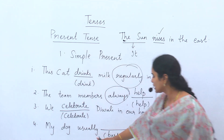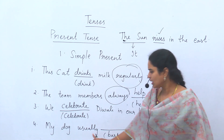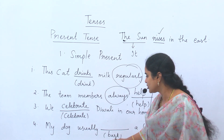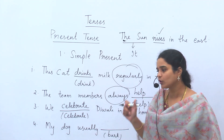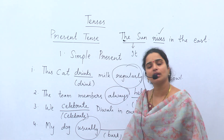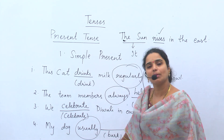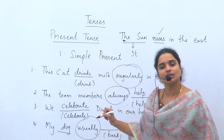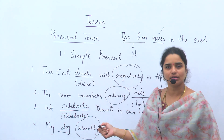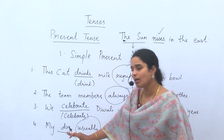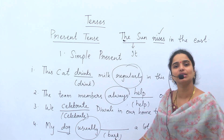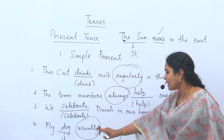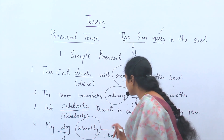The last sentence: 'My dog usually ___ a lot.' The clue word is 'usually' — so this is simple present tense. The verb is 'bark'. The subject is 'dog' — dog is considered as 'it', third person. So compulsorily we use the plural form — 'barks'. Answer: 'My dog usually barks a lot.'